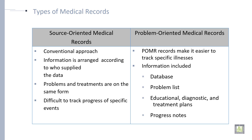There are two types of medical records. One is called source-oriented medical record. It is considered a conventional approach where information is arranged according to who supplied the data. Problems and treatments are on the same form, making it difficult to track the progress of a specific event.